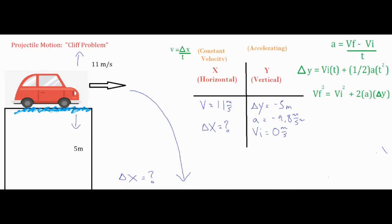So we can set up our formula: 11 meters per second equals delta x over t. We're looking for delta x as our final answer, so if we find time, we can easily find delta x with a quick step of algebra. A very high percentage of the time, you look at each column and see which side you have more information to work with. The side with enough information, you solve for time and carry it over to the other column. I'm going to use the formula that has t in it where I know every other variable, so I can solve for time. Then I'll plug in all my variables into that second formula and solve for time.